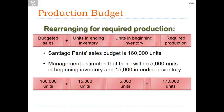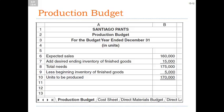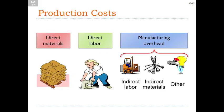The next thing is the direct labor budget. It takes half an hour of direct labor to make one unit. Since they need 170,000 units, total direct labor hours are 85,000 hours. The direct labor cost per hour is $22, so the total budgeted direct labor cost is $1,870,000. That's a pretty easy number to figure out.